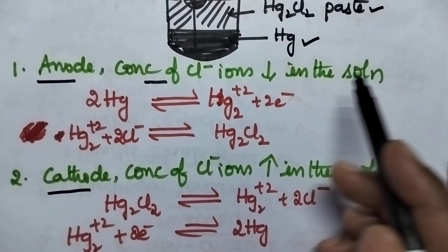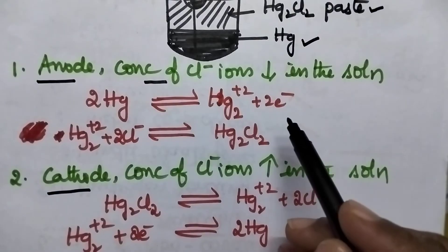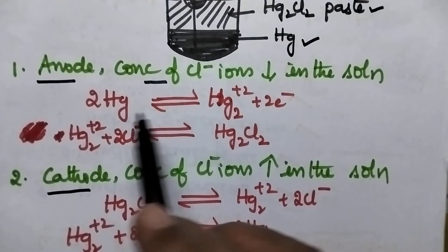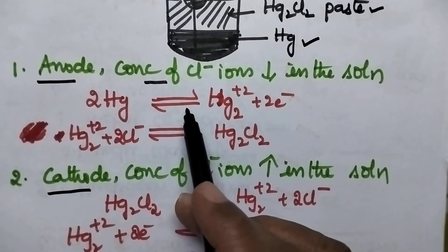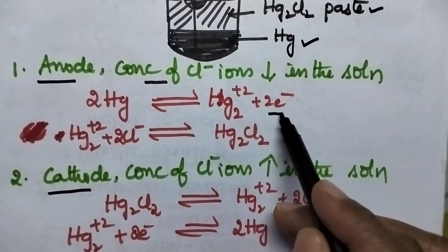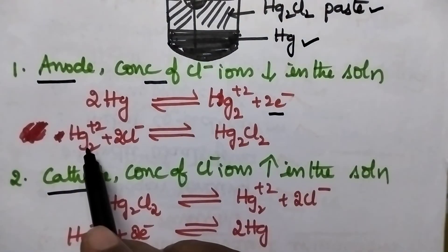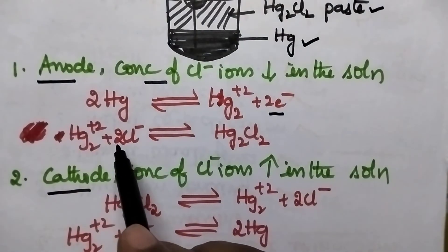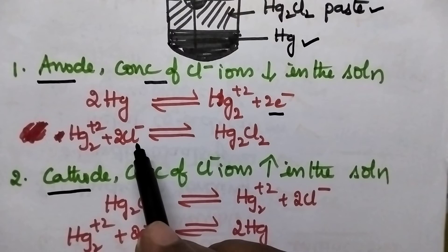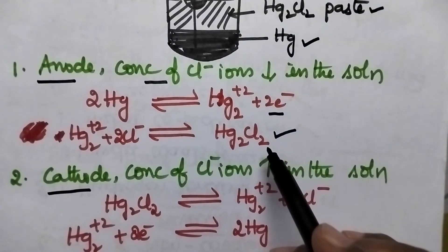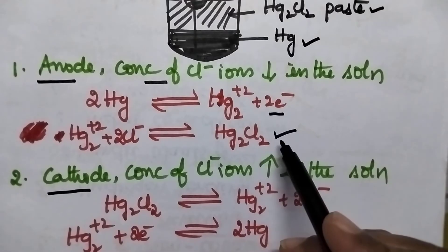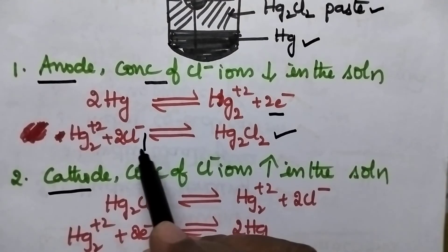With the result, there will be some decrease in the concentration of chloride ions in the KCl solution. Coming to the reactions taking place at the anode, initially the mercury from the liquid mercury undergoes oxidation with the loss of two electrons. And these mercurous ions will react with chloride ions present in the KCl solution and results in the formation of mercury chloride paste.